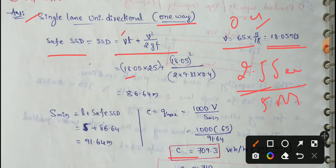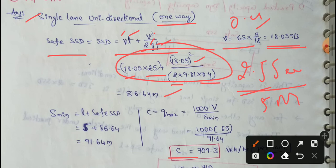18.05 into T. T means reaction time of driver, 2.5 seconds. Next, V value is 18.05 whole square by 2, 2 into G. G means 9.81. G value is 9.81. The coefficient of friction is 0.4. First thing is simplifying.